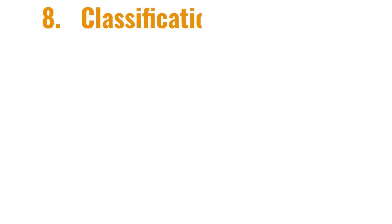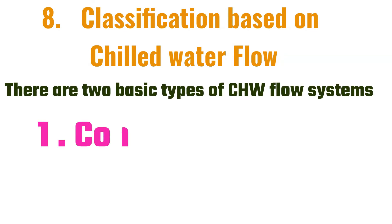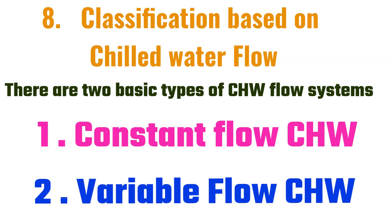Eighth classification based on chilled water flow: there are two basic types of chilled water flow systems - one, constant flow chilled water systems, which is for smaller systems, not used much today due to energy wastage; two, variable flow, which is used in larger systems. This can be primary-secondary loop and good for green design.